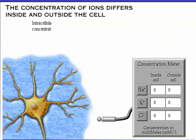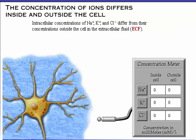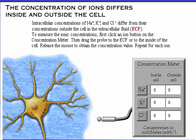Recall that the intracellular concentrations of sodium, potassium, and chloride differ from their concentrations outside the cell in the extracellular fluid. You can measure ionic concentrations in a neuron by using the imaginary concentration meter. Click an ion button on the concentration meter, then drag the probe either to the extracellular fluid outside the cell or to the inside of the cell. When you release the mouse, the concentration value of the ion will appear in its appropriate place in the meter.